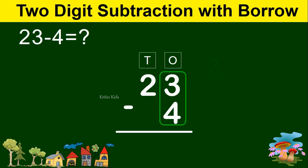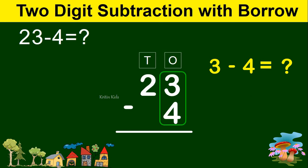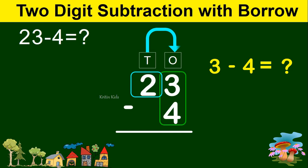Now let's subtract the values at the ones place. 3 minus 4 — can we subtract? No. So what will we do? We will have to borrow. Can we borrow a number from the next position, that is from 2? Can we take 1 from 2? Yes. So let's take 1 from 2 — this number becomes 13, and this 2 becomes 1.